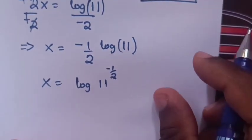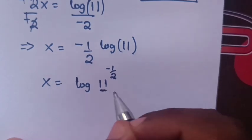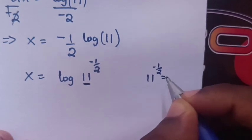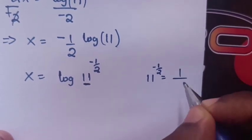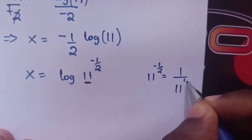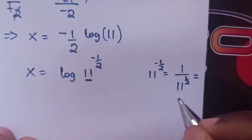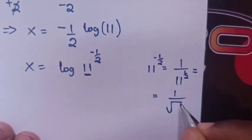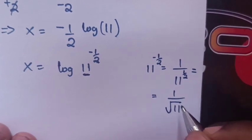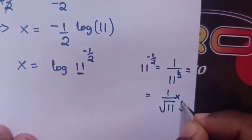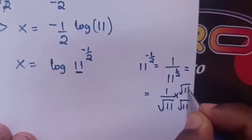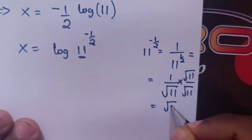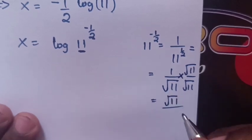Now, 11^(-1/2) is the same as 1/11^(1/2), which equals 1/√11. Then we rationalize the denominator by multiplying by √11 in both numerator and denominator. So this equals √11/11.